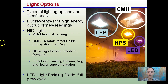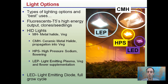For HID — high intensity output lights — metal halide lights are typically used for the veg phase, even though they're not pictured here. CMHs, or ceramic metal halides, are used for propagation into veg, and this is one example here — this would be a CMH light.